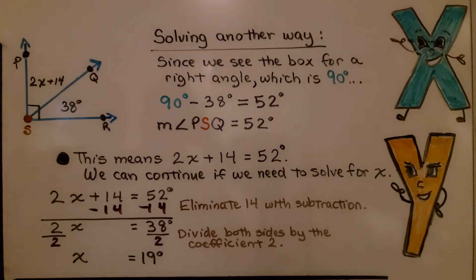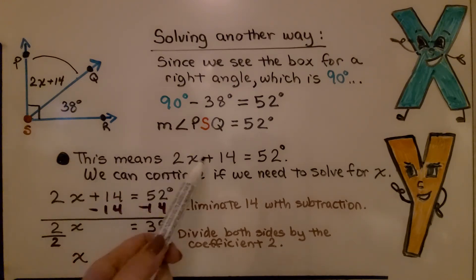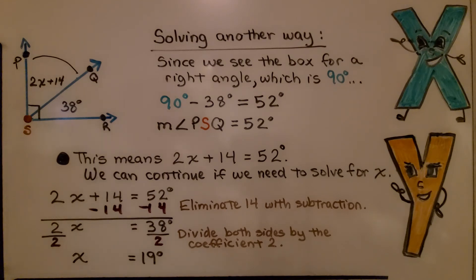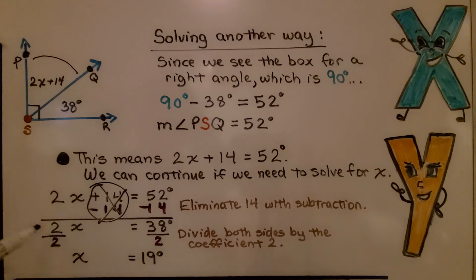Here's that other way: since we see the box for the right angle, which is 90 degrees, we can just do 90 degrees minus 38 degrees to get 52 degrees — the measure of angle PSQ. This means 2x plus 14 is equal to 52 degrees. If we need to solve for x, we subtract 14 from each side to eliminate it, leaving 2x equal to 38. We divide both sides by 2, giving us x equals 19 degrees.